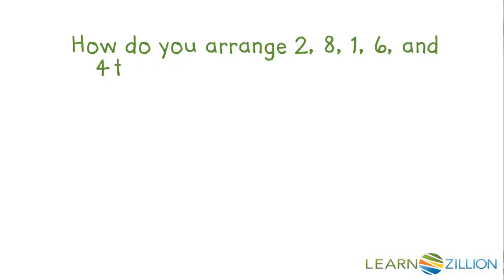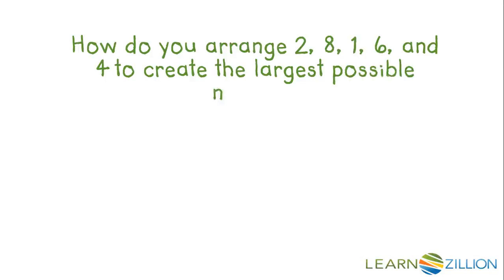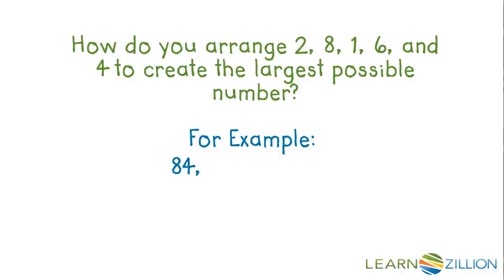How do you arrange a 2, 8, 1, 6, and 4 to create the largest possible number? For example, these two numbers contain the same digits but in a different order, and one number is larger than the other.